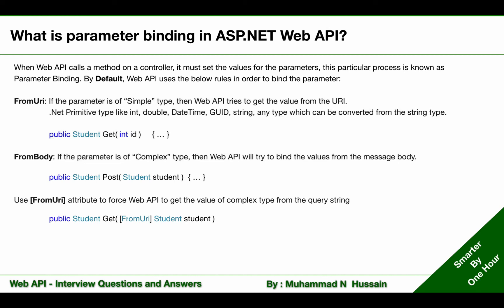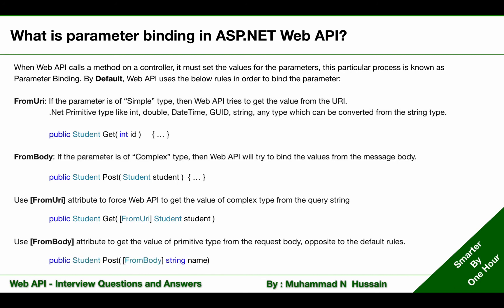Similarly, use the FromBody attribute to get the value of a primitive type from the request body, opposite to the default rules. In the following example, I'm using that attribute and the parameter type is a primitive type. But because of this attribute, Web API will now get that value from the message body to set this value.